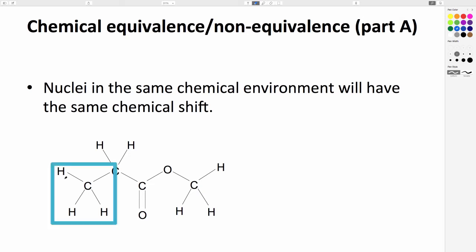For example, the three protons on the leftmost methyl group are all in the same carbon atom, which is next to the CH2, which is next to the carbonyl group. Because there is free rotation around the C-C bond, the three protons experience the same chemical environment on average. We can label them all HA.